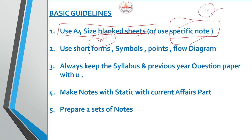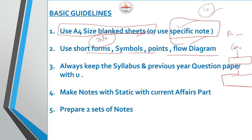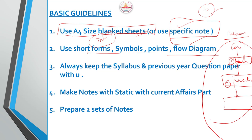You can follow the notes using short forms, symbols, points, and flow diagrams. For example, you can use a flow diagram for a corruption-related topic. What is the problem in India? Black money is created. The causes of corruption — the problem is that black money is created. To make a difference in your understanding, it is part of the topic. You can get a better answer if you do it this way.